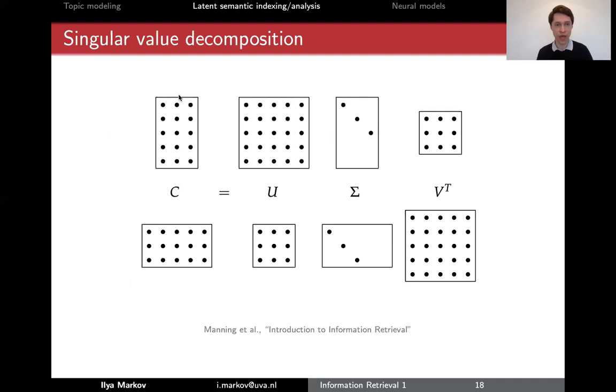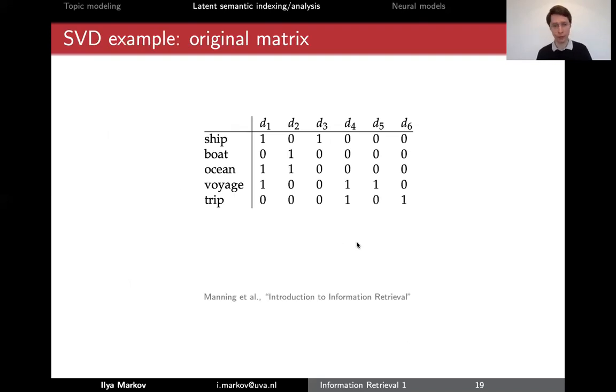Some examples, if you have C of this shape, then you'll have sigma as this. And if you have C more horizontal, you have sigma like that. That's just linear algebra, nothing but IR yet. So let's take a look at the example.